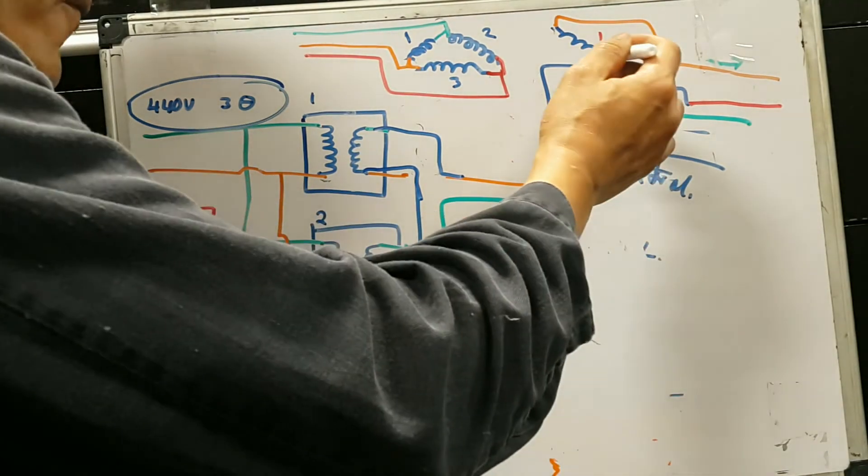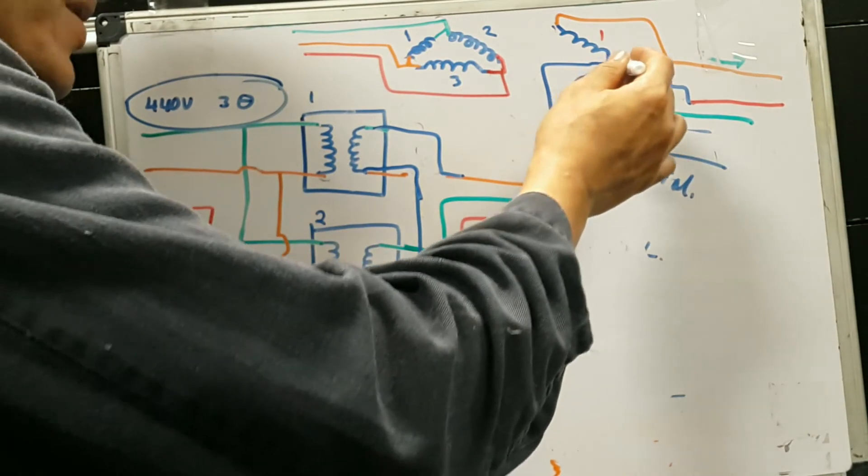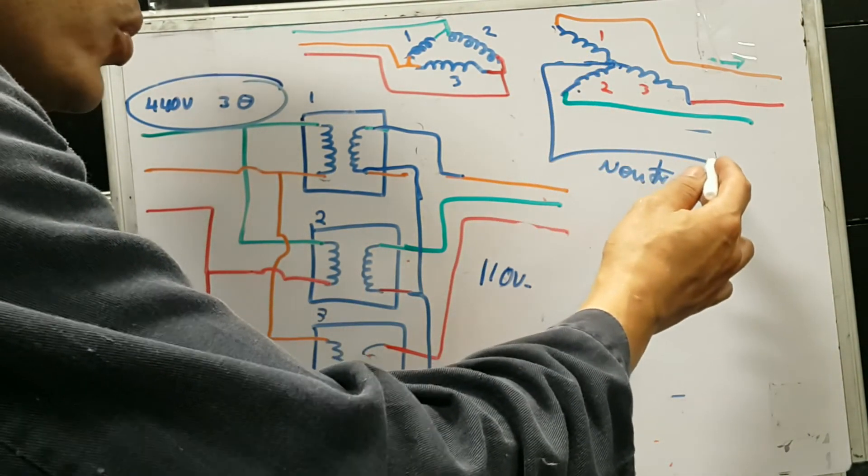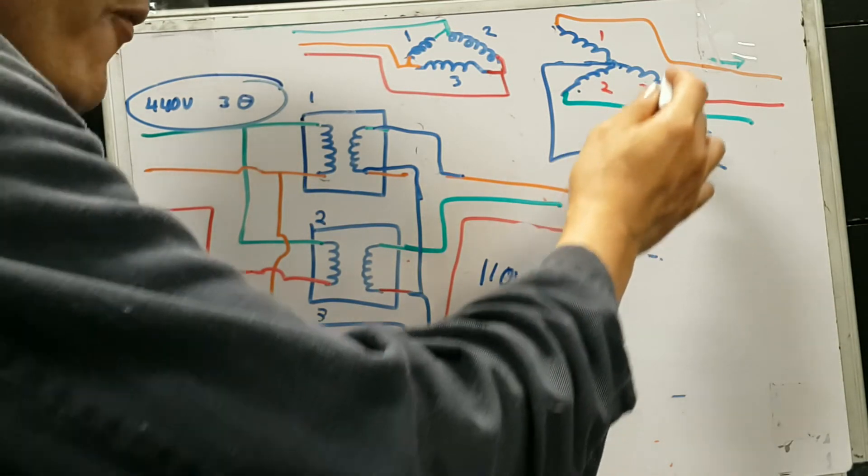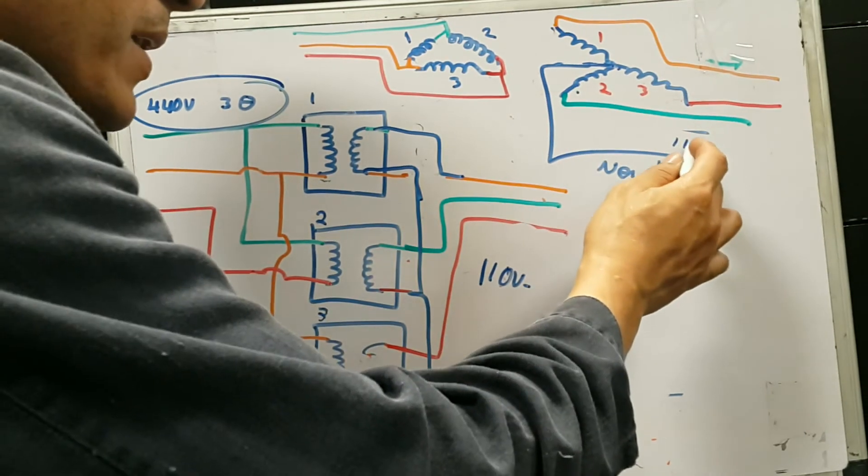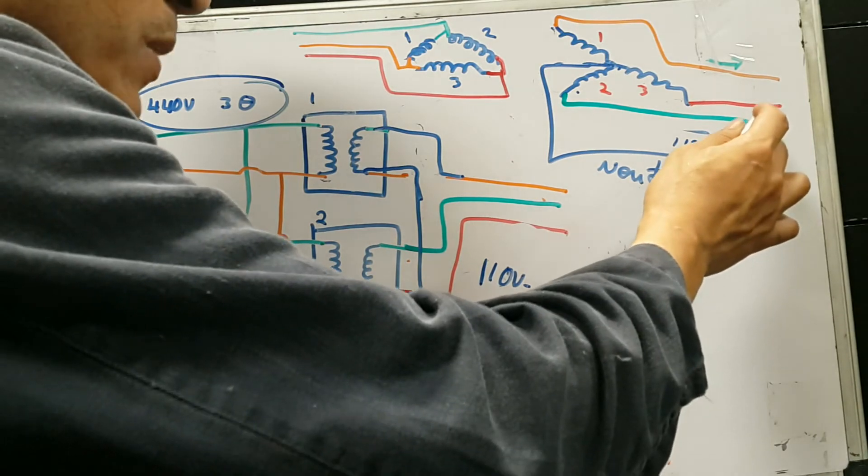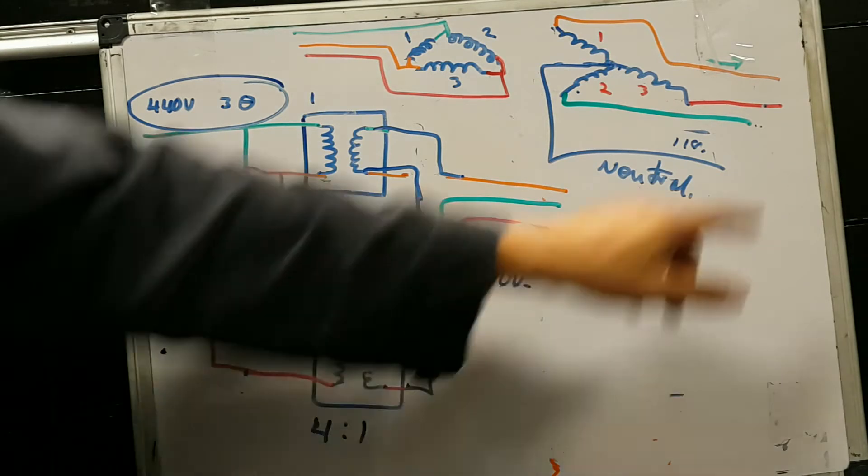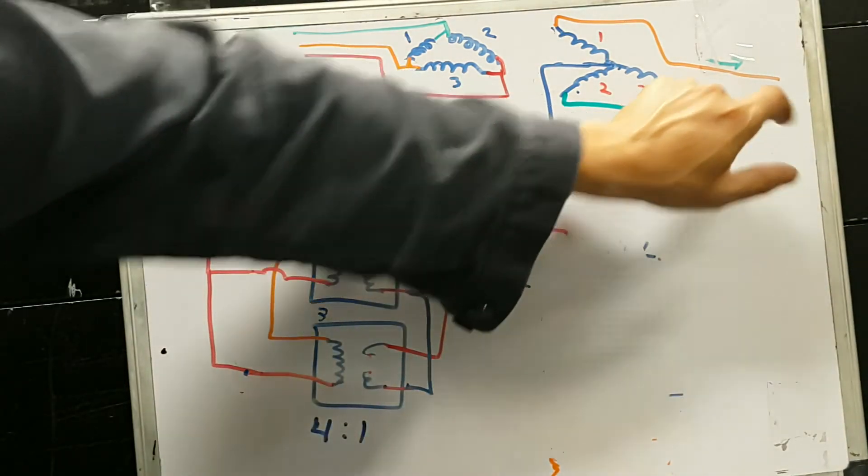So what that accomplishes is that now it gives me the ability to add voltage. What I mean by that is that in each phase I still get 110 volts, but if I go from here to here it's 110 volts. But now there is a fourth line which is called the neutral.